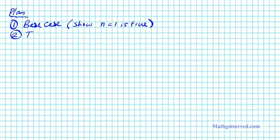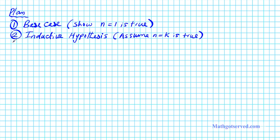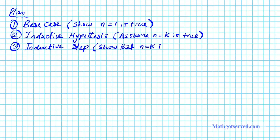Number two is the inductive hypothesis. For the inductive hypothesis, you're going to make an assumption — you're going to assume that n equals k is true for some k in the set of positive integers. The third part is known as the inductive step. Given your inductive hypothesis, can you show that the next step is also true? For the inductive step, we have to show that n equals k is true by assumption, and it follows that the next step, n equals k plus 1, is also true.